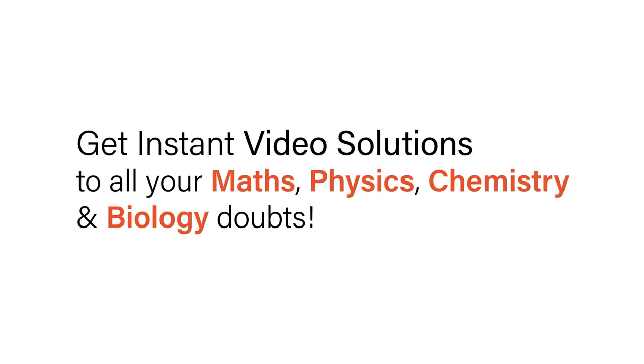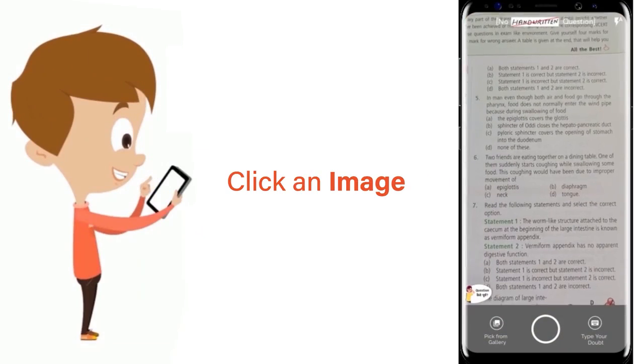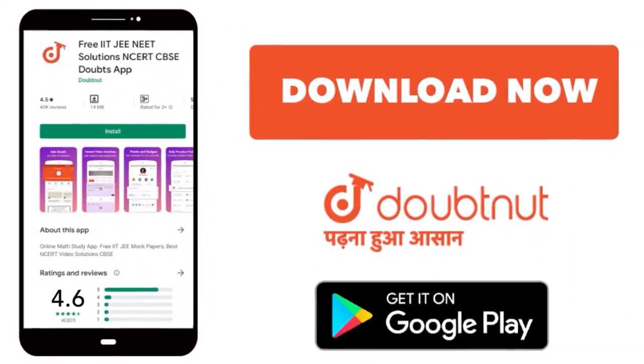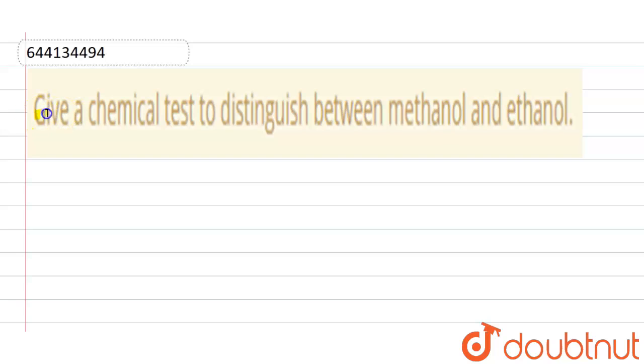With Doubtnet, get instant video solutions to all your maths, physics, chemistry, and biology doubts. Just click the image of the question, crop the question, and get instant video solution. Download Doubtnet app today. Our question is: give a chemical test to distinguish between methanol and ethanol.